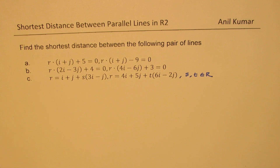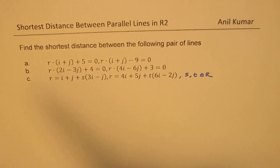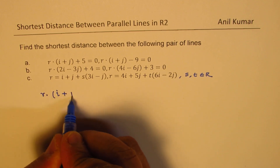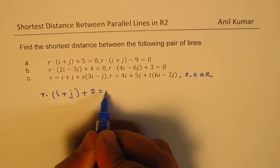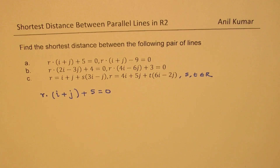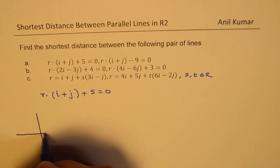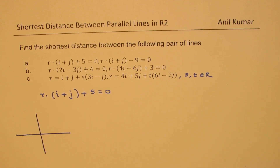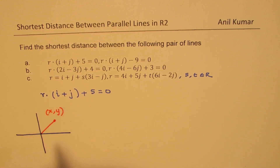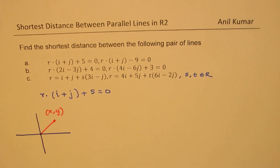I want to clarify a few things based on the way we write equations. Take this equation: r dot (i plus j) plus 5 equals 0. Here r, in R2, represents a particular point x, y. The direction we are talking about is i plus j.